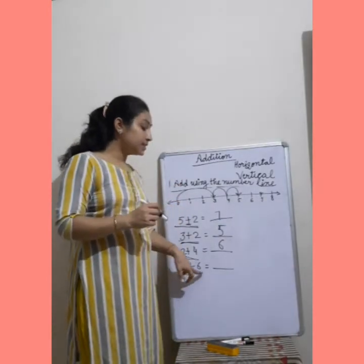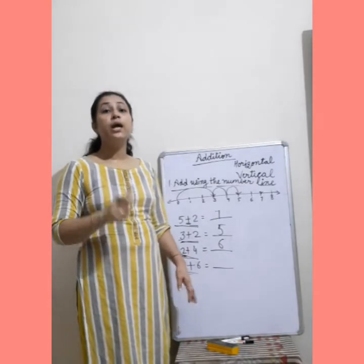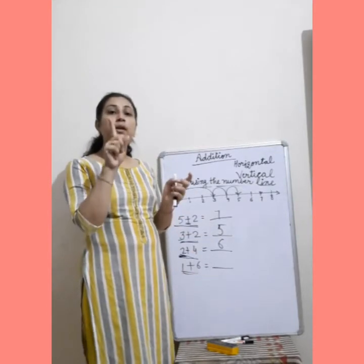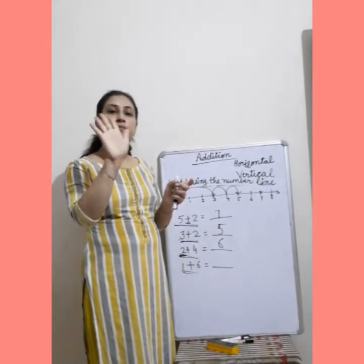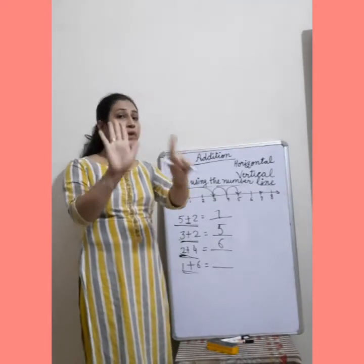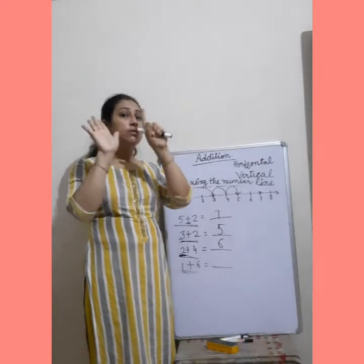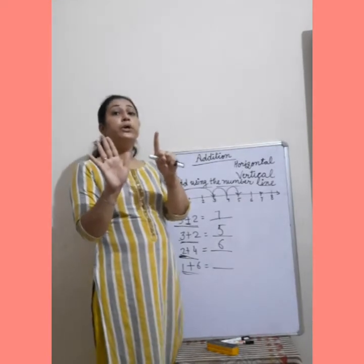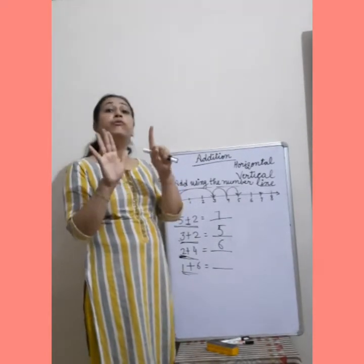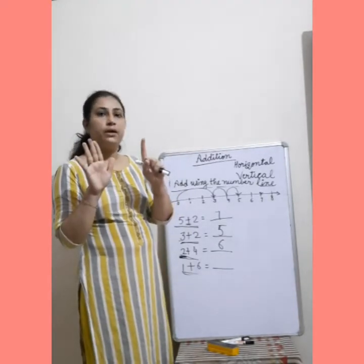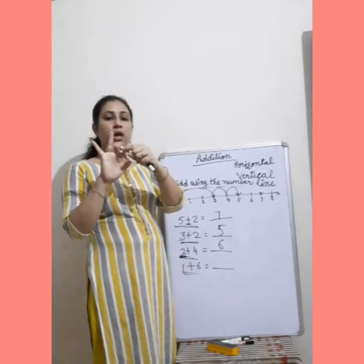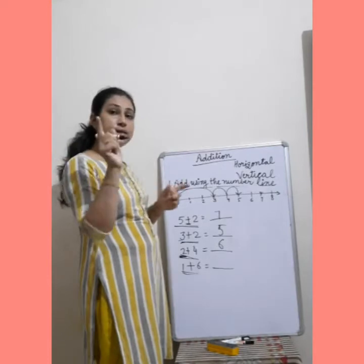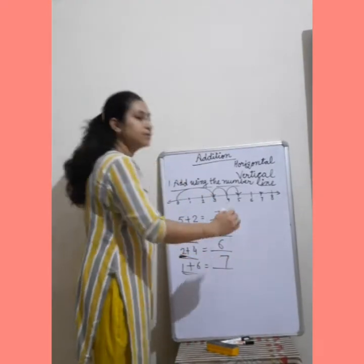Next — 1 plus 6. First digit जो है आपका — 1, keeping in your mind. And 6 finger up करो — 1, 2, 3, 4, 5, then 6. 6 finger up. 1 को keep in your mind. We will count after 1 — 2, 3, 4, 5, 6, then 7. Your answer is 7, and right here 7.